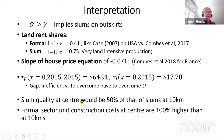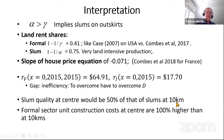Some things that come out of the model: quality at the center is 50% of quality at 10 kilometers out — that's the crowding factor. Formal sector construction costs at the city center are 100% higher than at 10 kilometers, which is the diseconomy from the engineering literature.